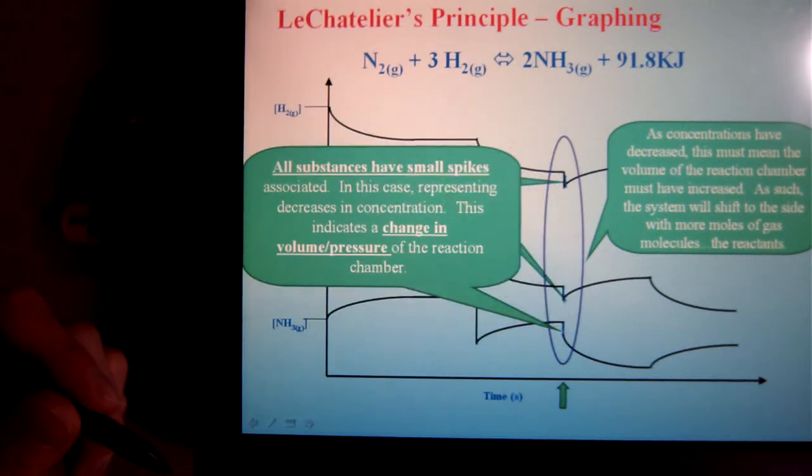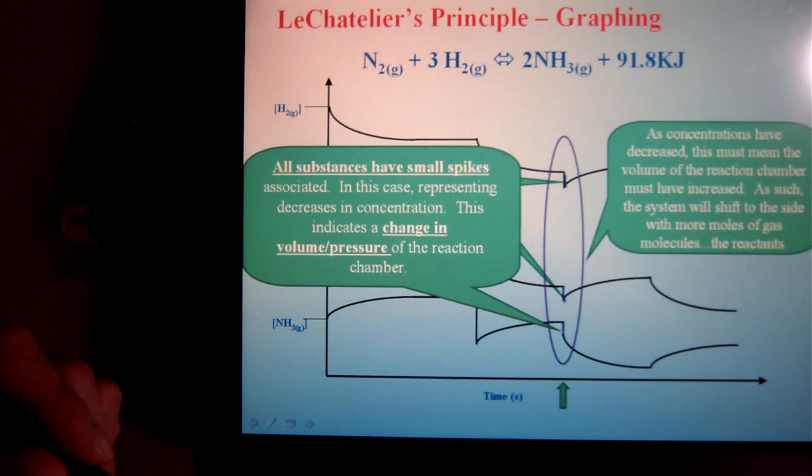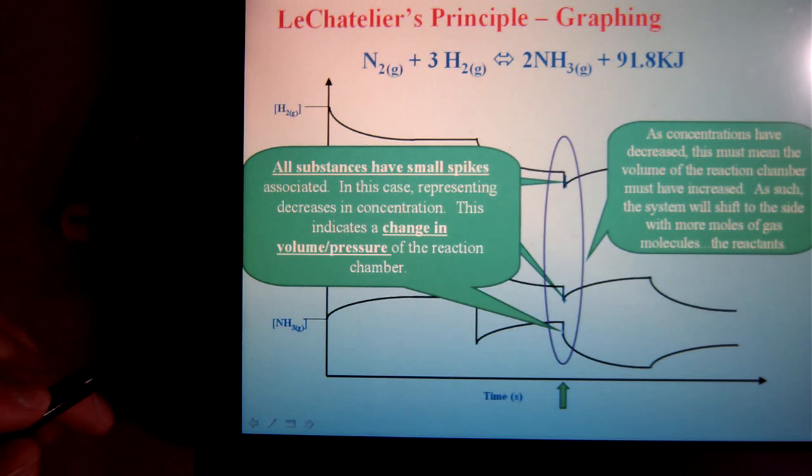Well, when we have these multiple spikes, that means that we have altered the pressure and or volume. Okay, so now I have to figure out what I've done. So if I've decreased the concentrations of everything, that must mean I've increased the volume of the system.